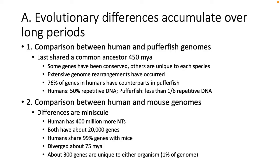Evolutionary differences do accumulate over long periods of time. When we compare humans with puffer fish genomes, our last common ancestor was 450 million years ago. Some genes have been conserved; others are unique to that species. There has been extensive genome rearrangement. 76% of genes in humans have counterparts in a puffer fish. 50% of our DNA is actually repetitive, whereas puffer fish hardly have any repetitive DNA. We have also compared our genome with mice — humans have 400 million more nucleotides, we both have around 20,000 genes, share 99% of genes with mice, and our last common ancestor was 75 million years ago. About 300 genes are unique to either organism, which is about 1% of the genome.